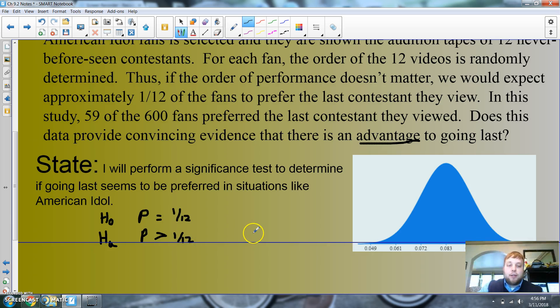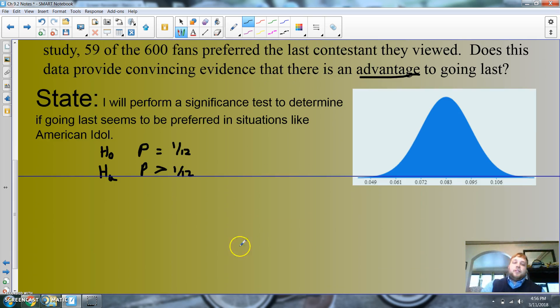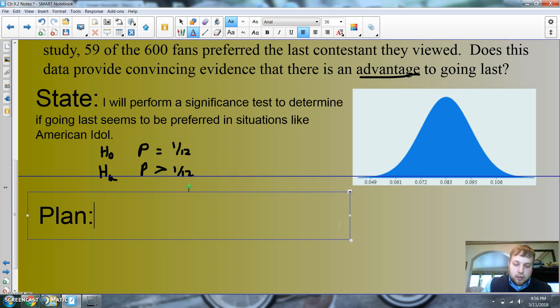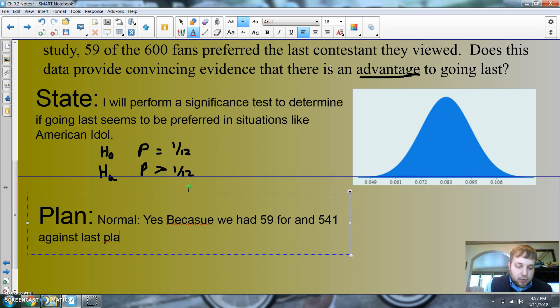Moving on to plan. My plan is, is it gonna be normal? I'm gonna say yes because we had 59 for and 541 against last place, which passes the 10 success and 10 fails.